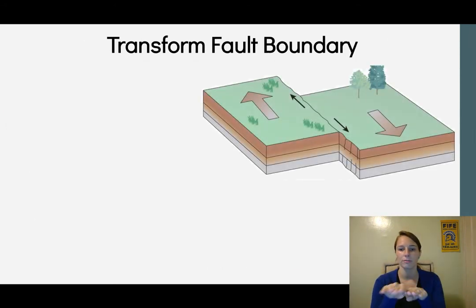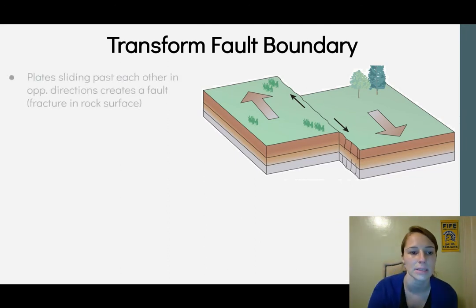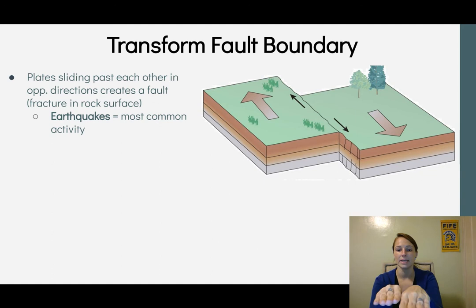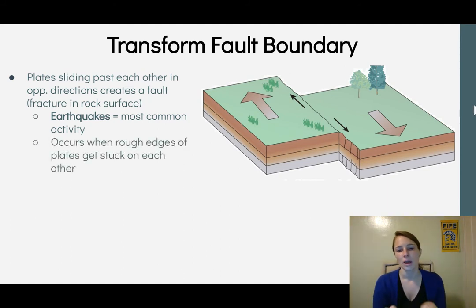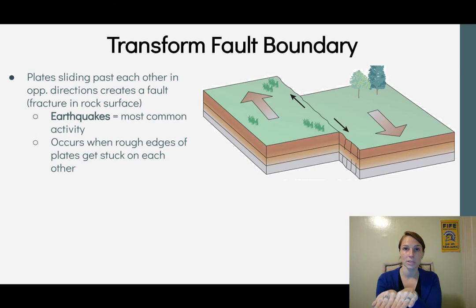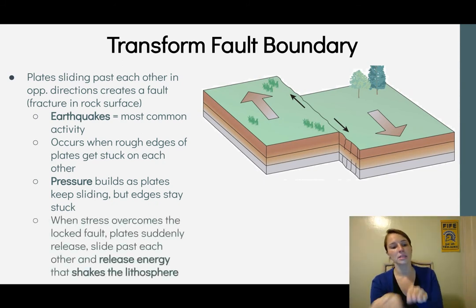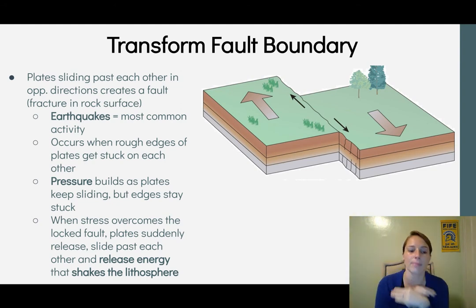At a transform fault boundary, plates slide past each other in opposite directions, creating a fault — a fracture in the rock surface that you can visibly see in some places. Earthquakes are the most common activity here. The plates have rough edges that get stuck on each other; pressure builds as the plates keep moving, and eventually the stress overcomes the locked position, causing the plates to suddenly release and slide past each other, releasing energy that shakes the lithosphere.